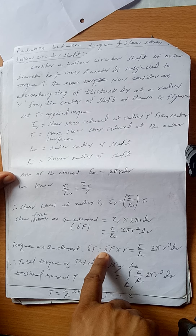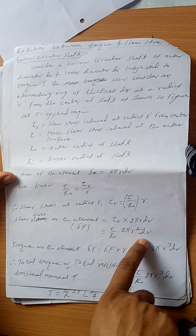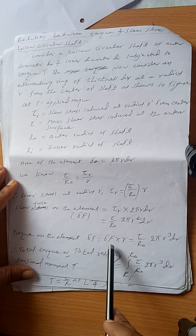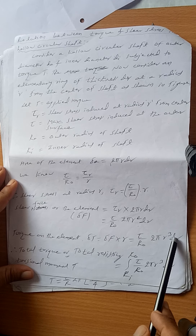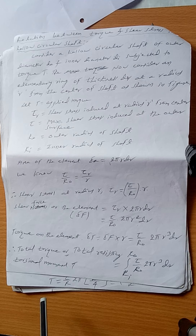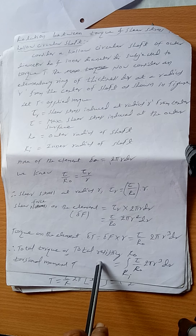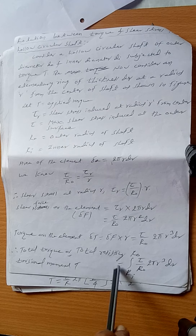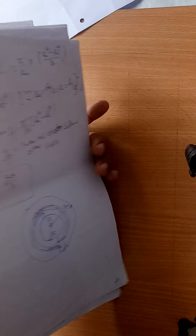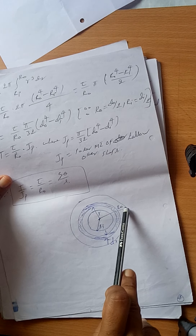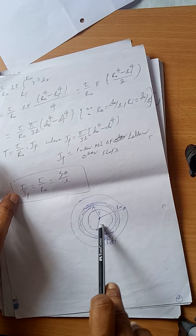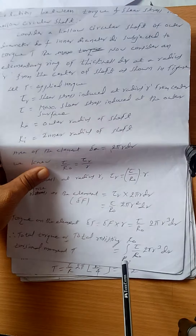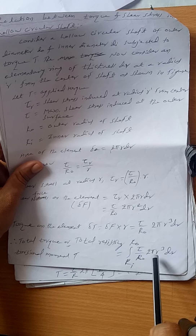Torque on the elemental ring is equal to δF × r. δF = (tau/R_o) × 2πr² × dr, so the torque on the elemental ring is (tau/R_o) × 2π × r³ × dr. The total torque across the cross-sectional area is obtained by integrating this. The limits for the hollow circular shaft are from inner radius to outer radius, that is R_i to R_o — since this is the hollow portion, there is no material inside. So T = ∫(R_i to R_o) (tau/R_o) × 2π × r³ dr.